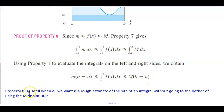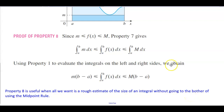Property 8 is useful when all we want is a rough estimate of the size of an integral without going to the bother of using the midpoint rule.